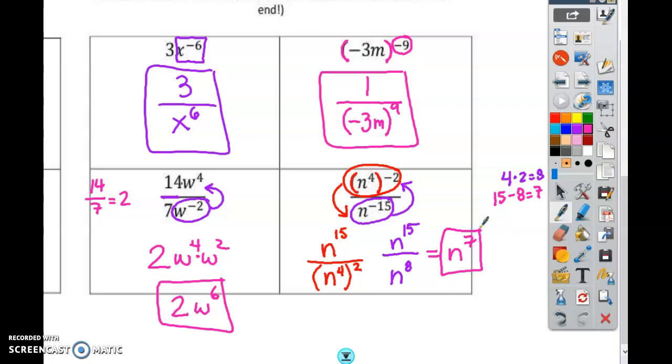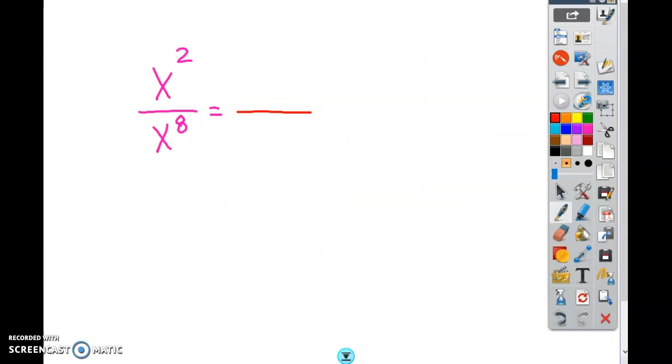We're just going to have to keep practicing and practicing. So I'm going to give you some delta math work to do right now so that you can practice. Really quickly, this one. 2 minus 8 is a negative 6. So it's left at the bottom. It's a positive 6 at the bottom and a 1 at the top. That's how you do it, because there's more.